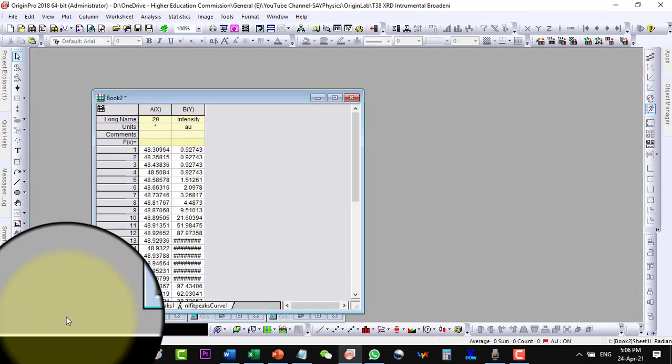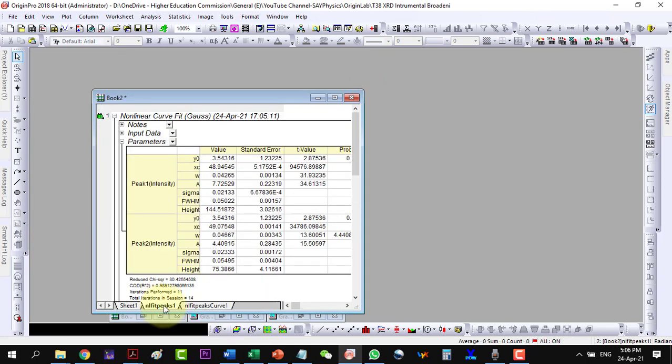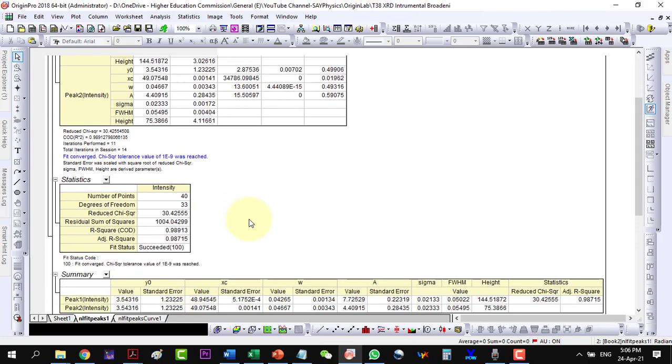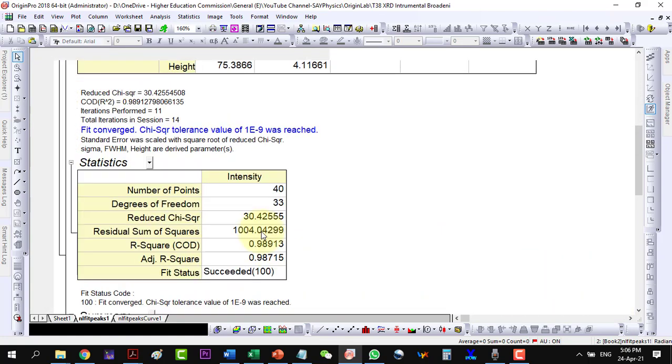Now, go to the data and copy the FWHM value of the first peak from the non-linear fit peak 1 under the summary table.